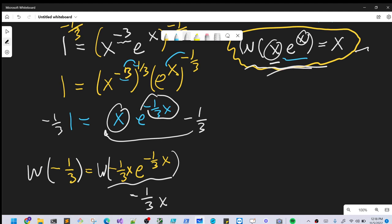On the left side, Lambert W of -1/3. Now we need to multiply both sides by -3 so we can isolate our x. So now we've solved for x: x = -3W(-1/3).